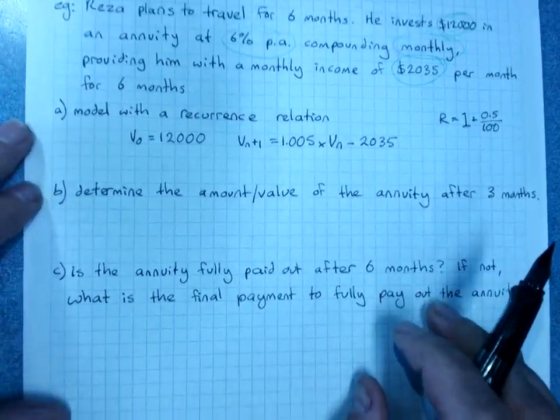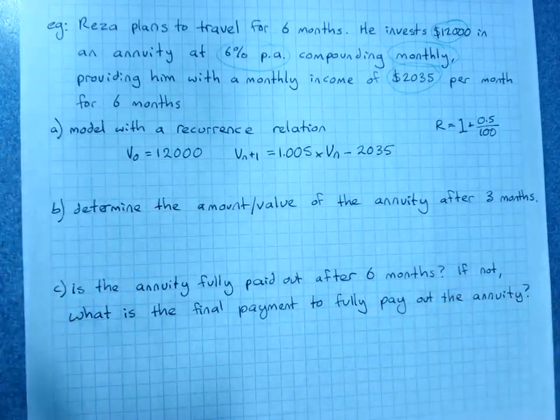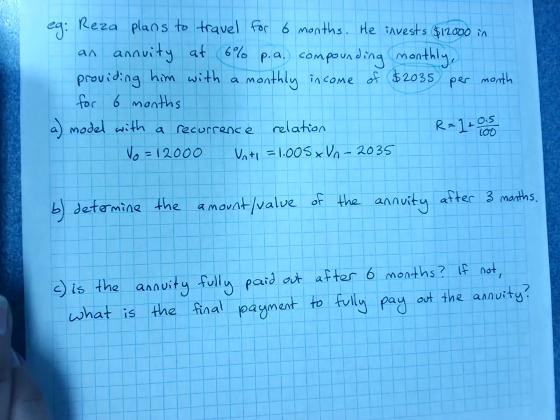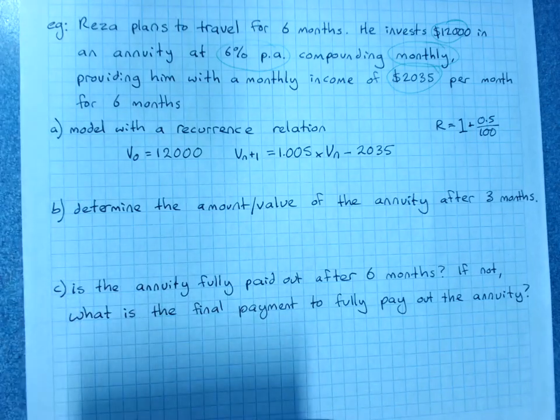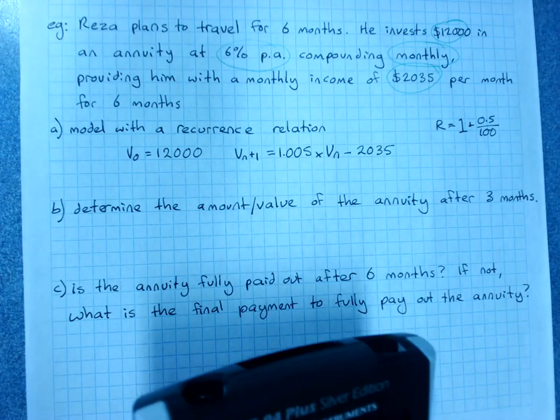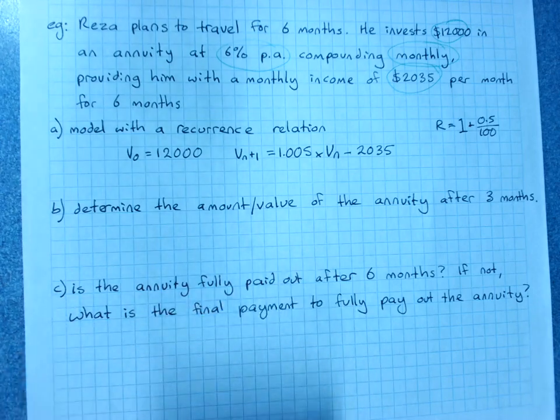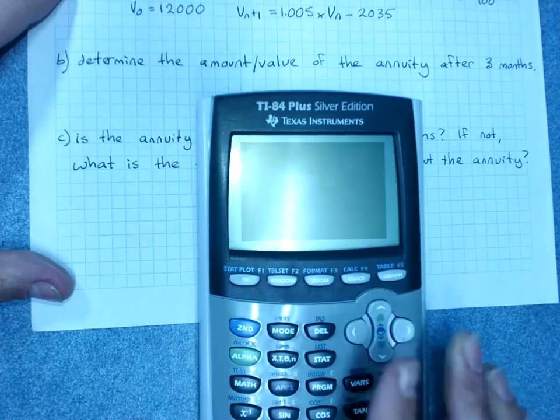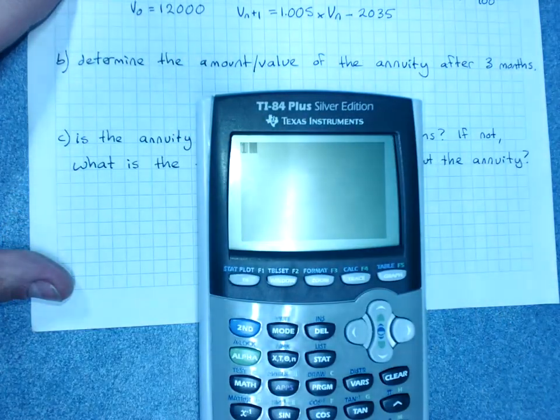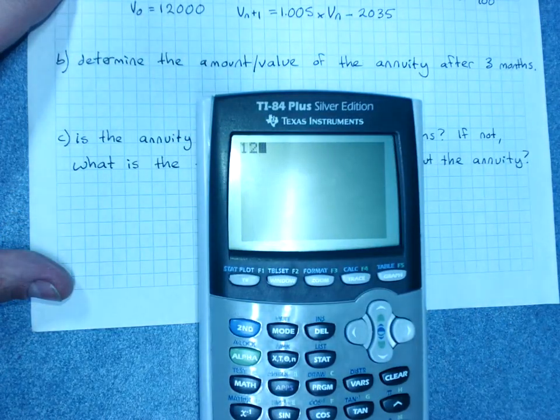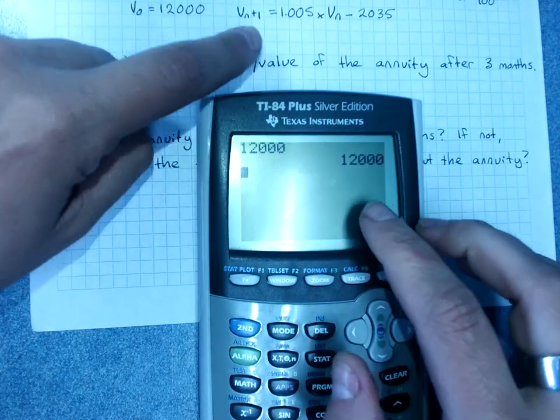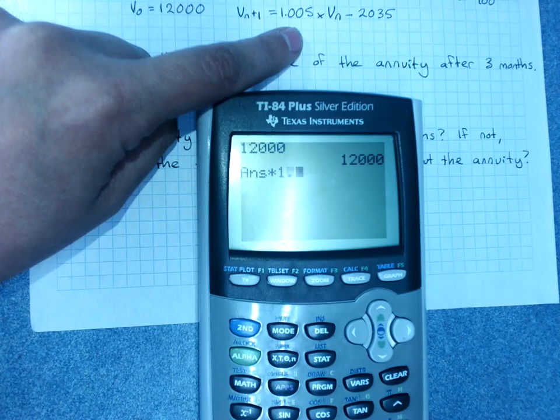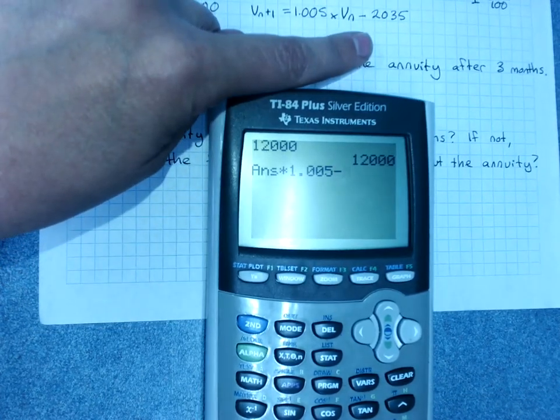And you'll remember when we're using a recurrence relationship, it's really easy to use your graphics calculator to step through that. So if you recall correctly... We start with our V0, 12,000, and hit enter. And then it will be multiply by the growth factor, 1.005, subtract the payment.